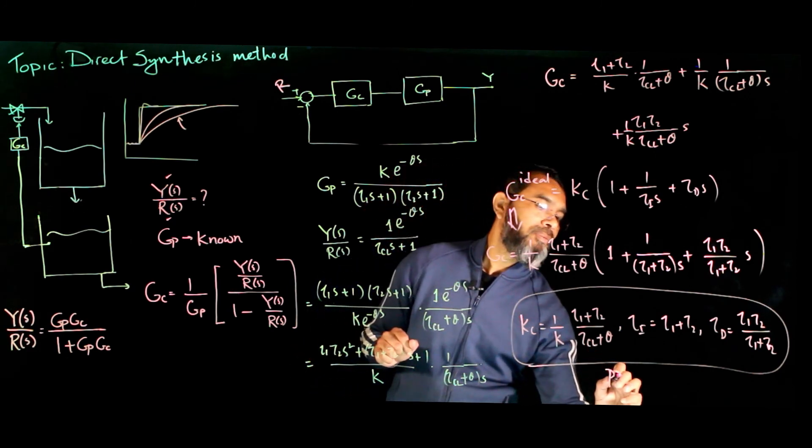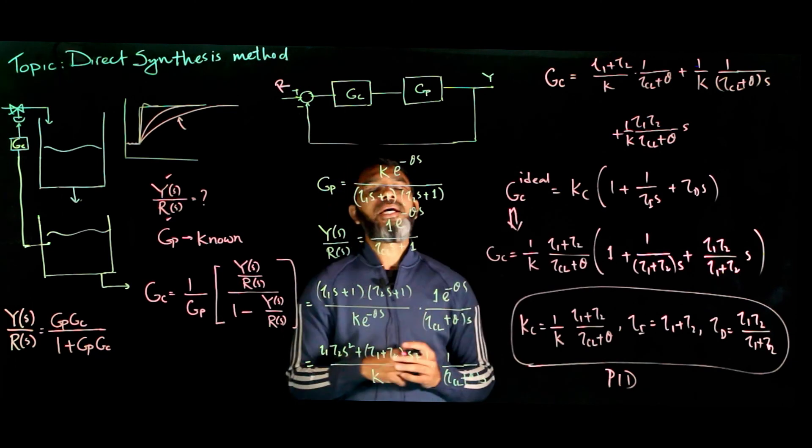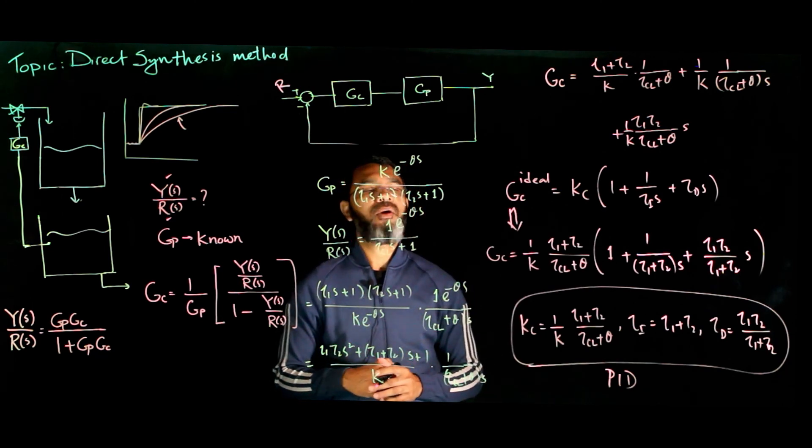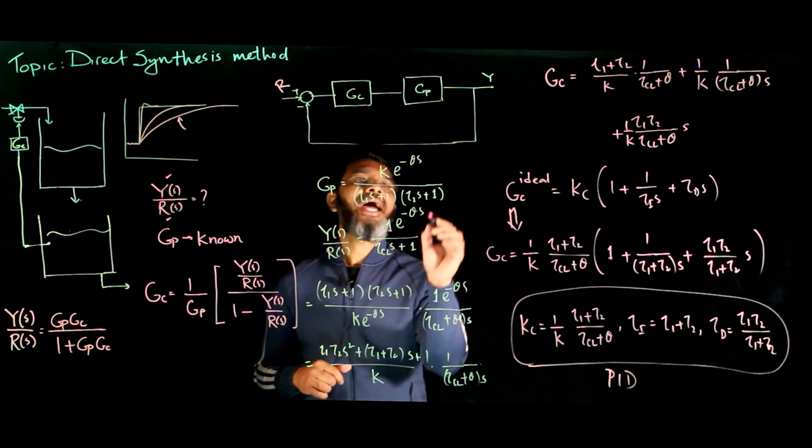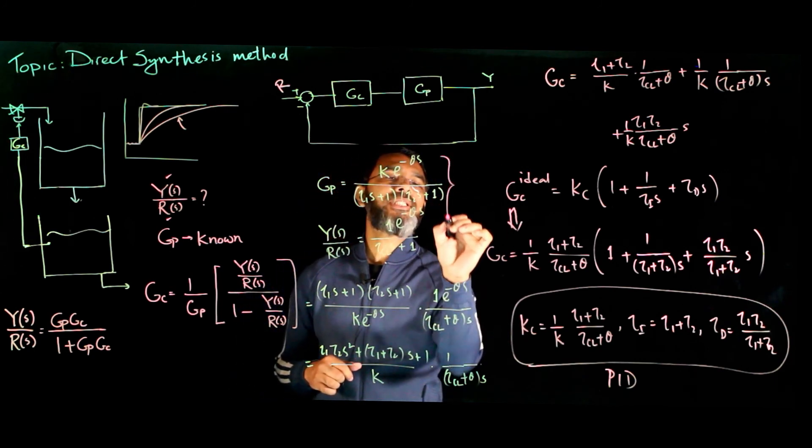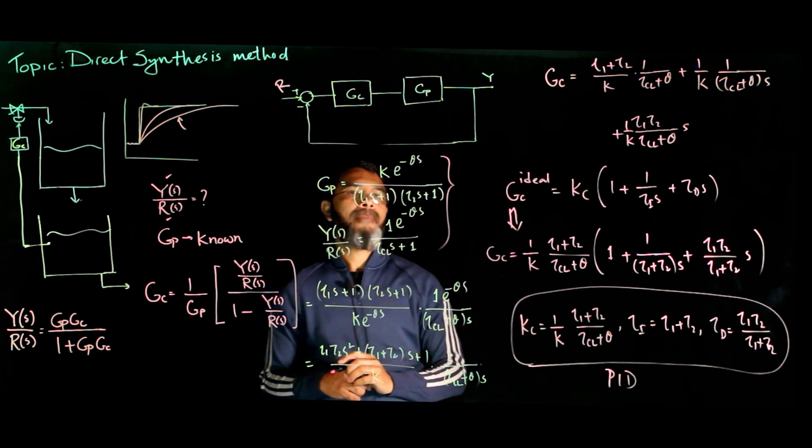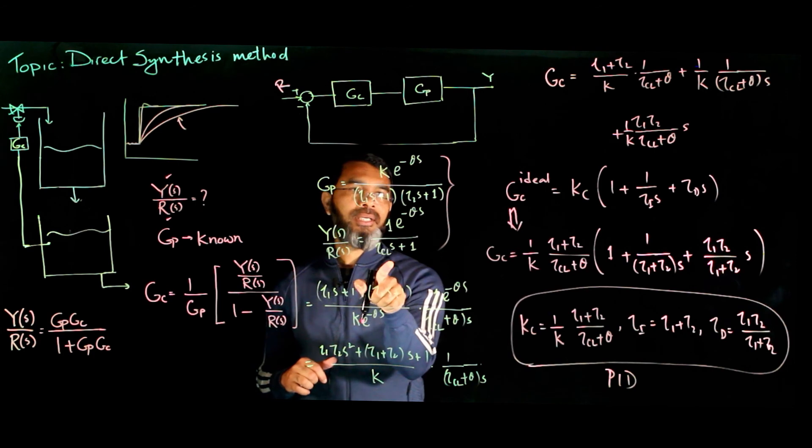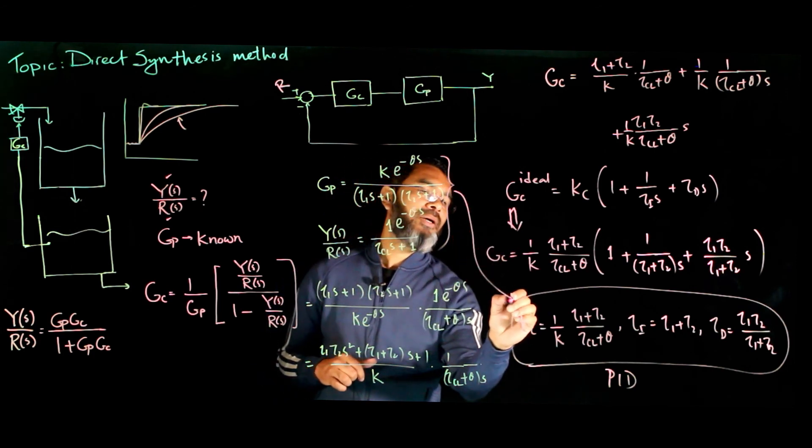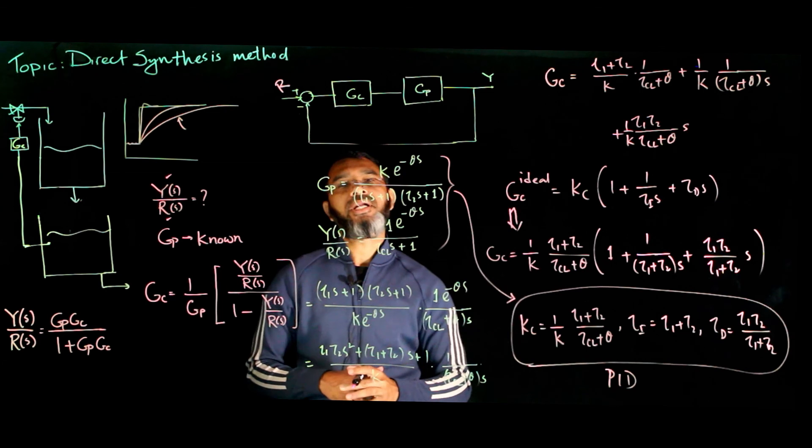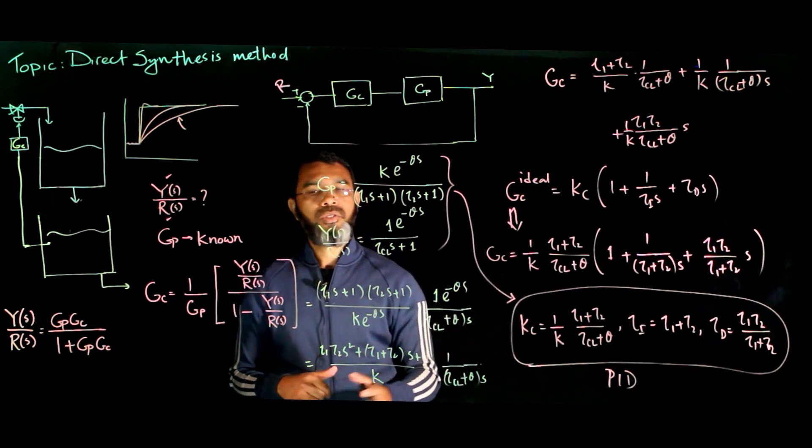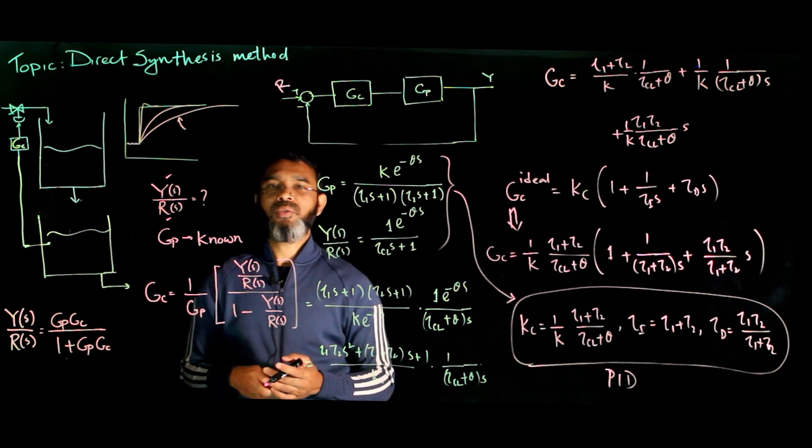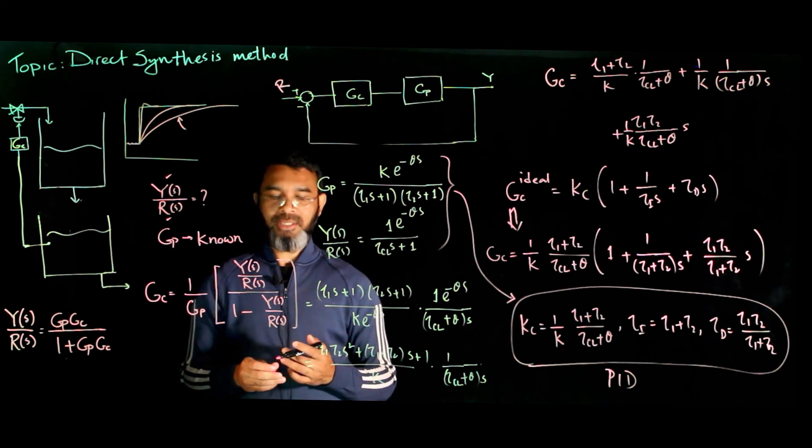So we see we get a PID controller for this case. As I said, the direct synthesis method gives the controller structure along with the controller parameters. So if we have a second order model with time delay for the process and the desired closed-loop response is first order, we need a PID controller having this parameter set. You can see that we can use the direct synthesis method to get the structure as well as the parameters of the controller.